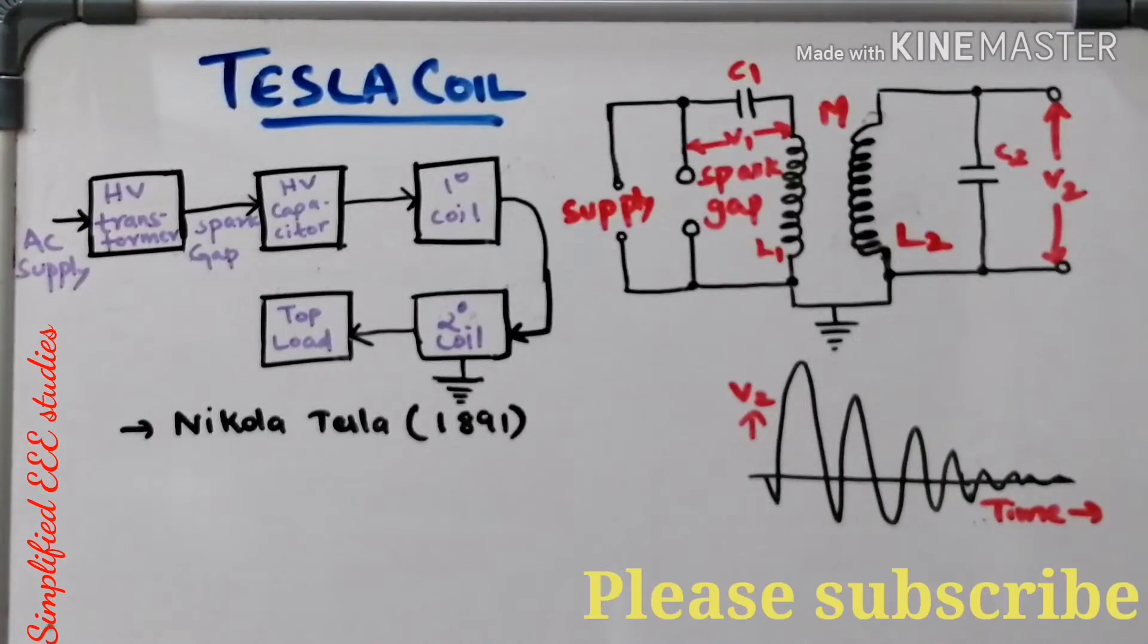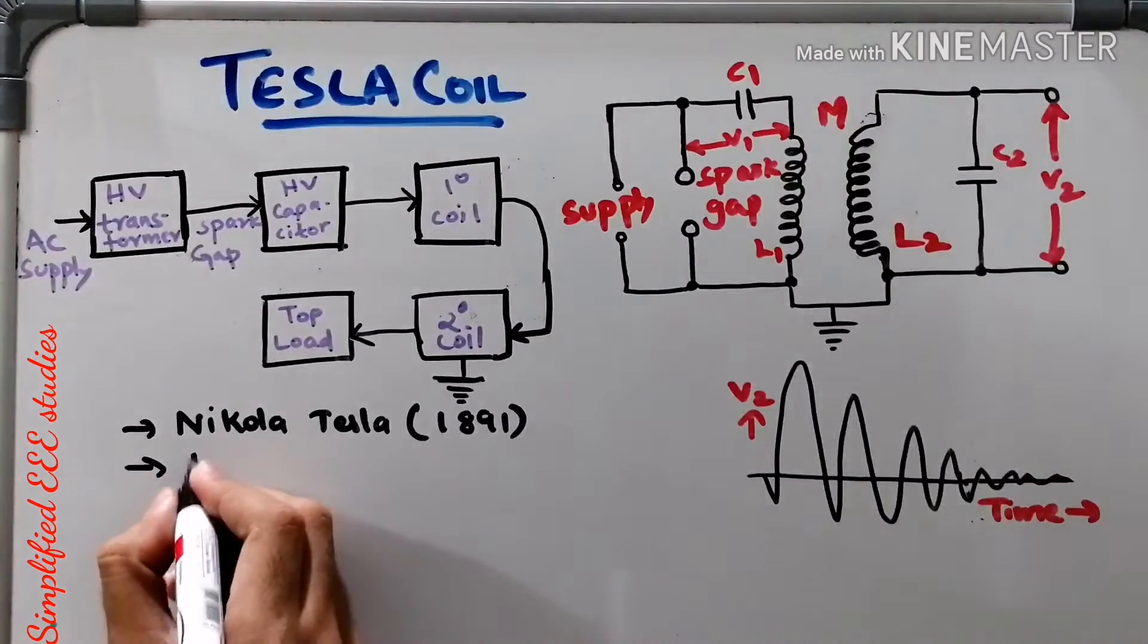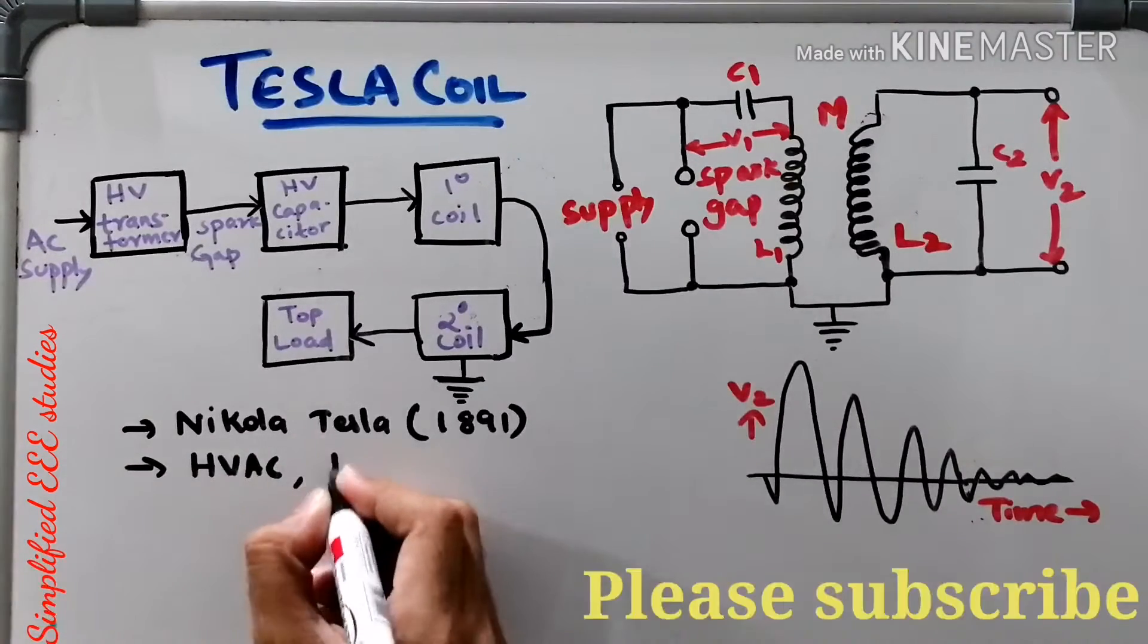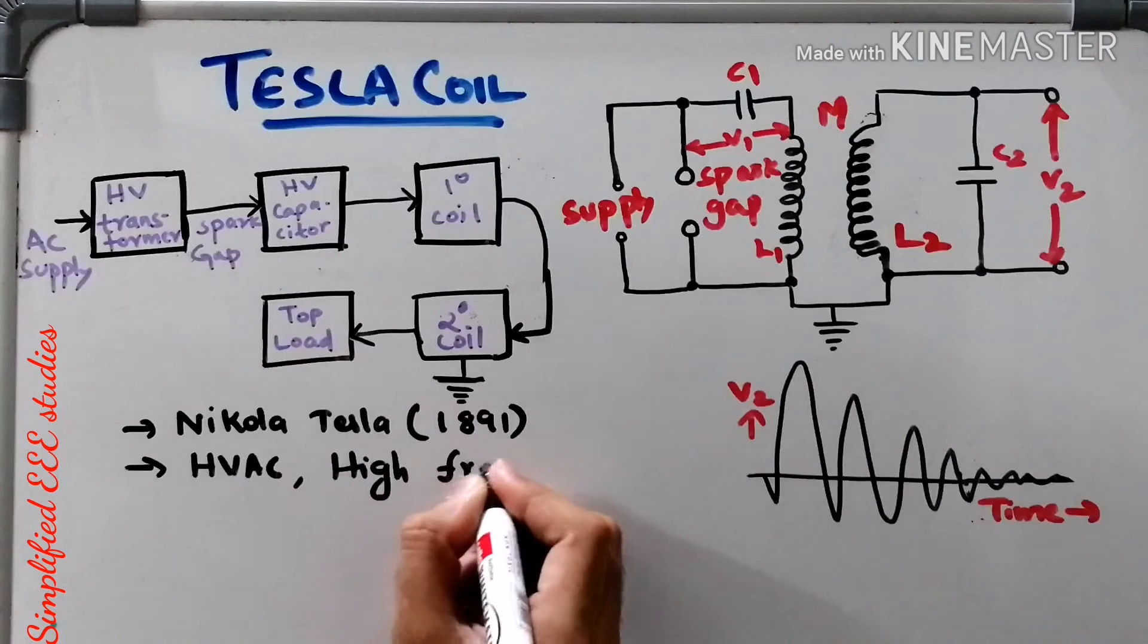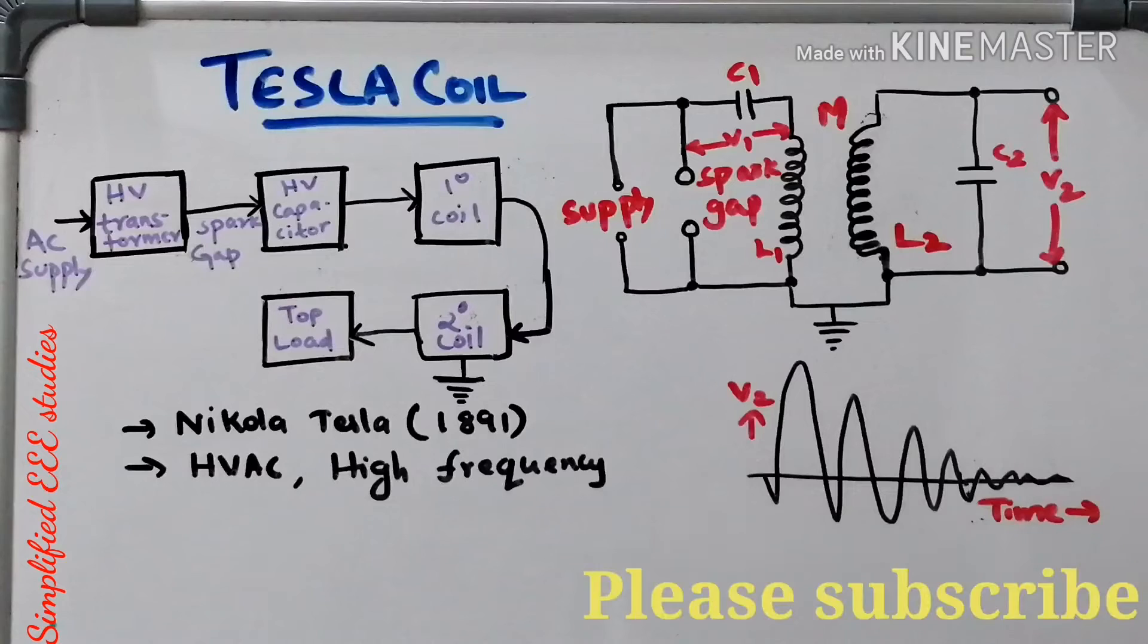Why Tesla coil is required? The main purpose of Tesla coil is to produce high voltage AC with high frequency. High voltage AC can be generated by using Tesla coil.